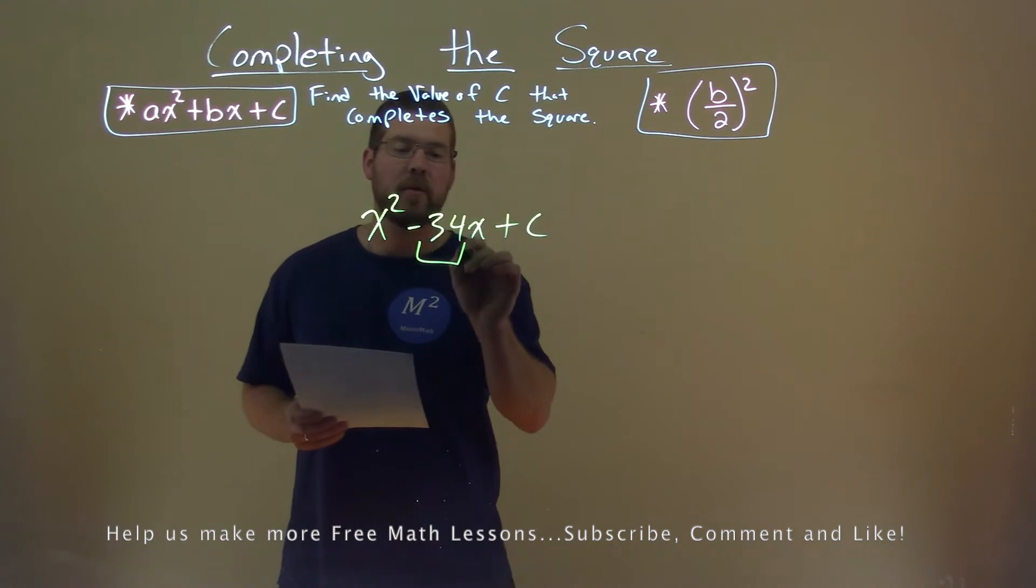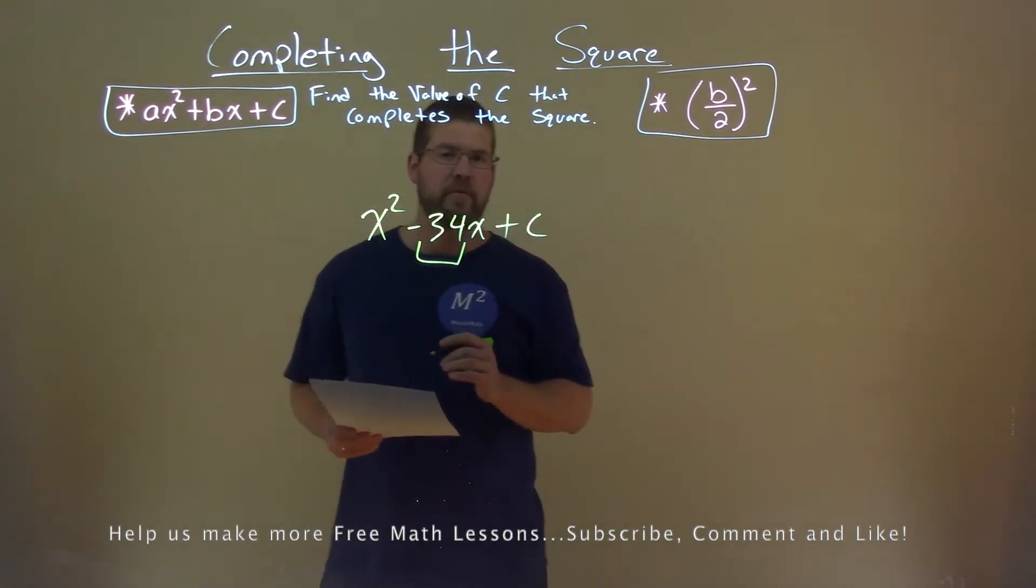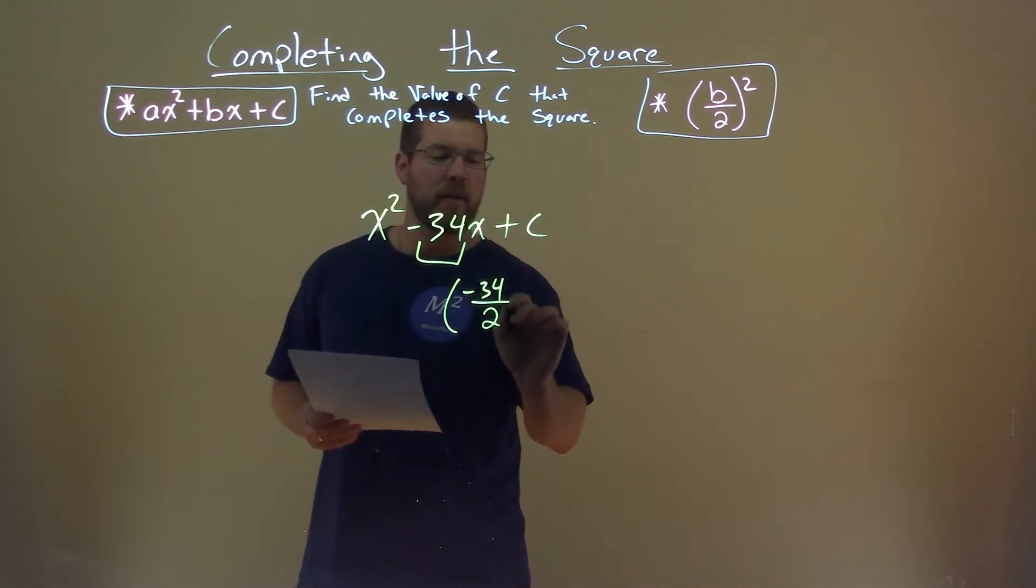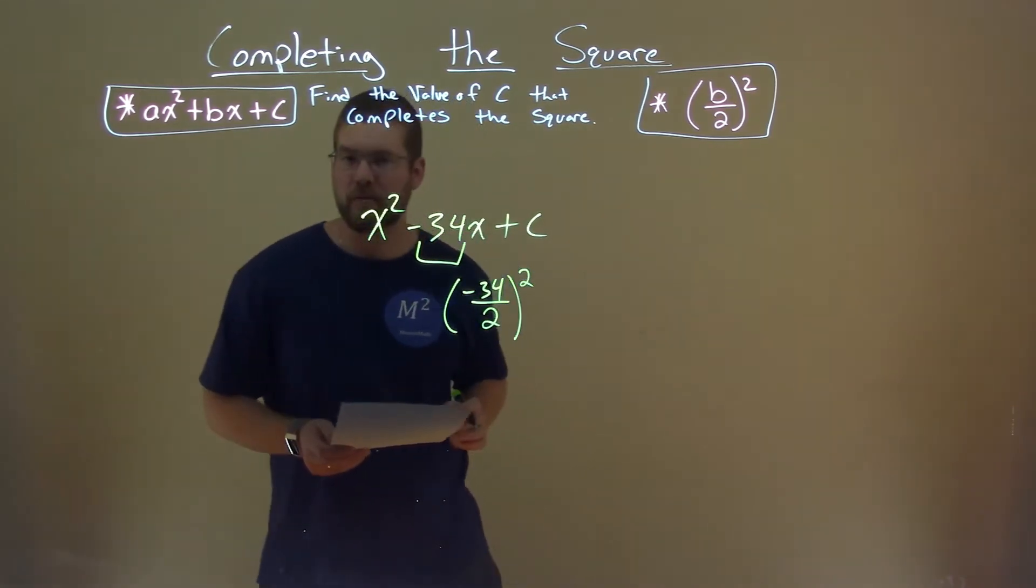We start with our b value, which is the negative 34 here, and we're using this formula. We take negative 34, we're going to divide it by 2, and we're going to square it.